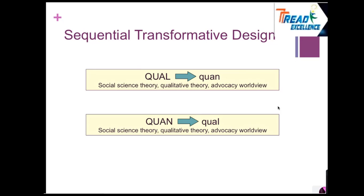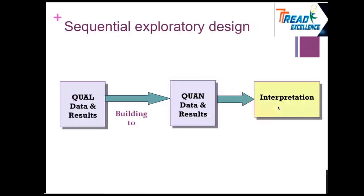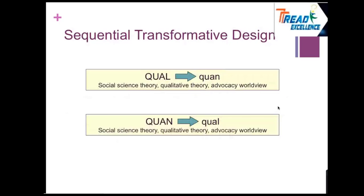In the sequential transformative design, you put a theory into it. You begin with a qualitative phase leading into another qualitative phase, and then interpretation. When you look at the design, you see qualitative building or leading to qualitative, and then interpretation. You actually start from a qualitative phase, and both the first and last qualitative phases serve as theoretical lenses.